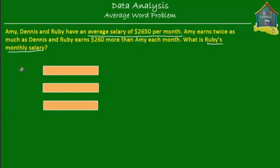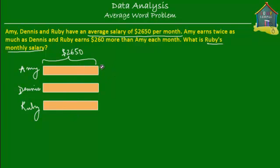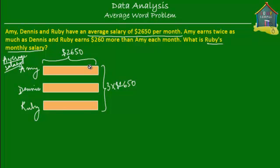So this is Amy, this is Dennis, and this is Ruby. They each earn an average of $2,650 per month. So if each of these earns $2,650 per month, then the total would be three times $2,650. That's only the average — this doesn't mean that each of them actually earns $2,650. Maybe Amy earns more, maybe Dennis doesn't earn that much, and maybe Ruby earns more than $2,650. But we also know the actual relation between their salaries.